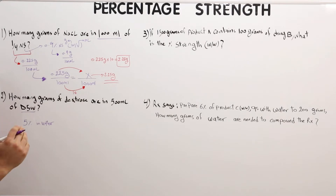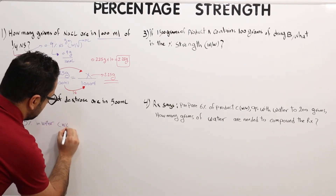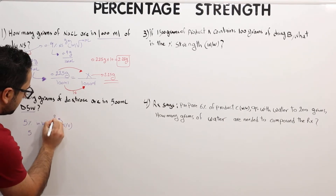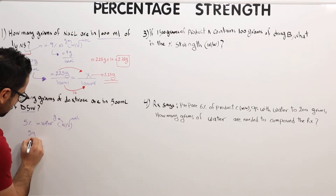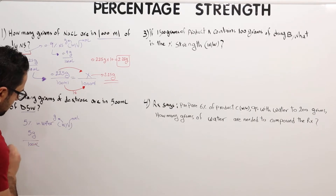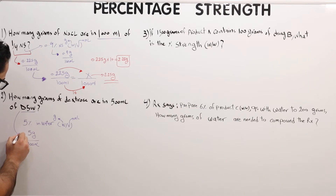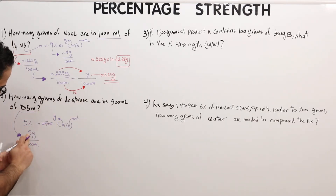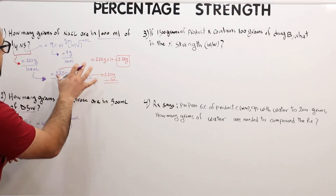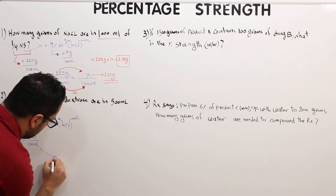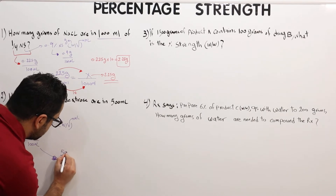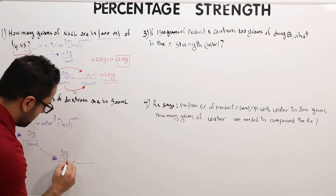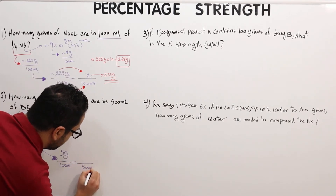Dextrose is also weight in volume, meaning we have 5 grams of dextrose per 100 ml of water. The question is asking how many grams are in 500 ml. So we know there are 5 grams in 100 ml — let's use the same method as before.